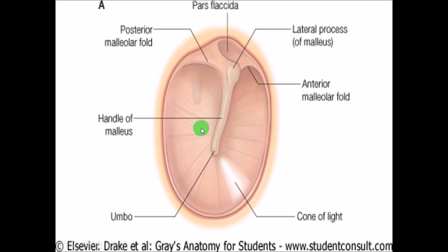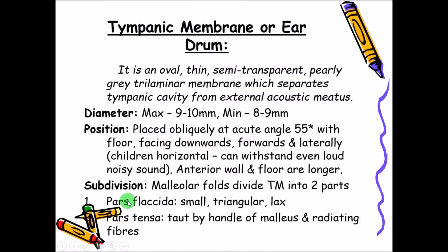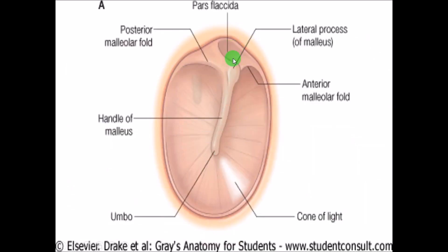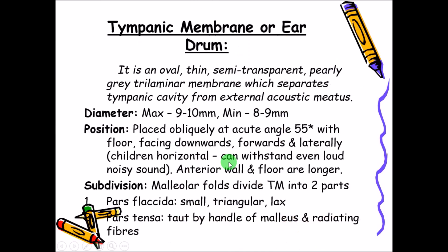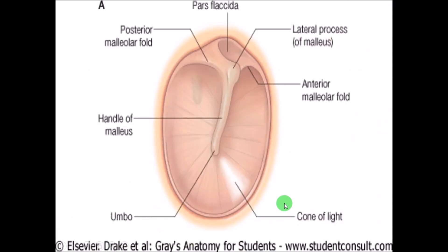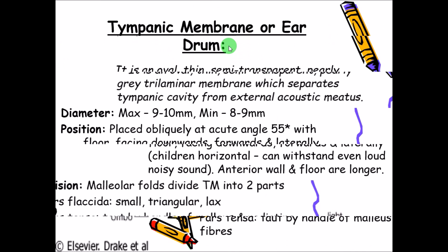The pars flaccida is lax and loose, and the pars tensa is tense and tight. That is why, depending on their consistency, they have been called pars flaccida and pars tensa. Pars flaccida, as you can see, is small, triangular, and lax.